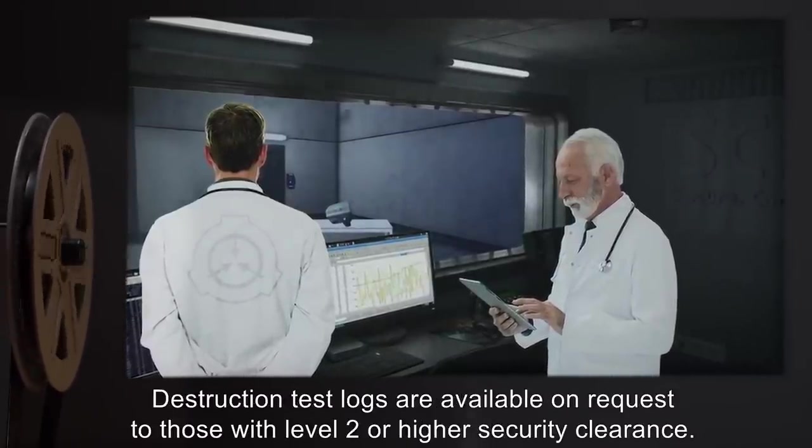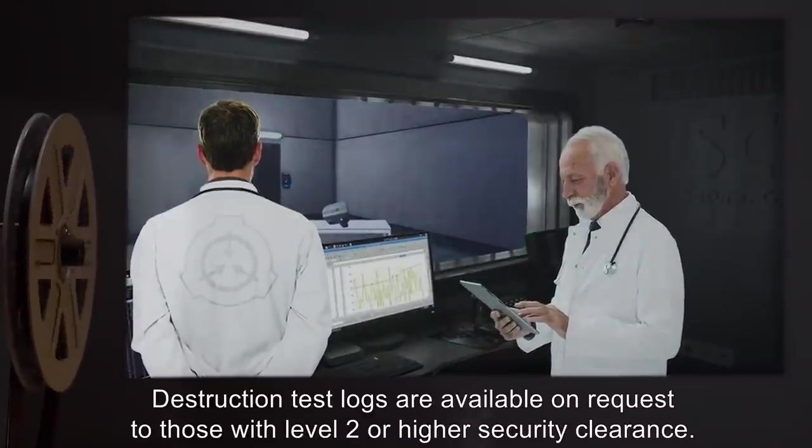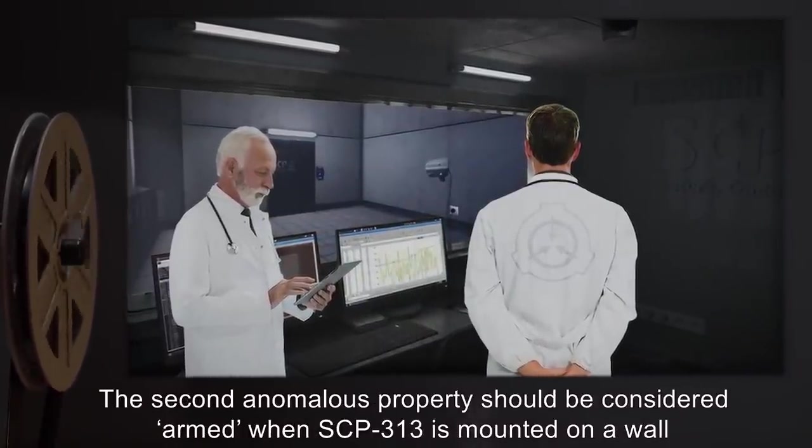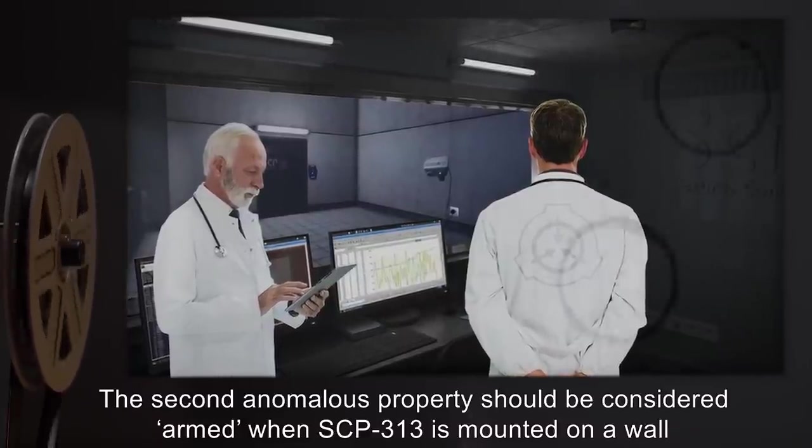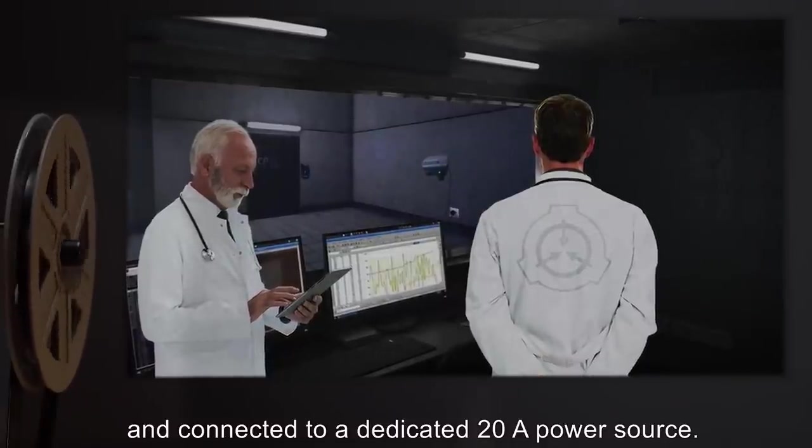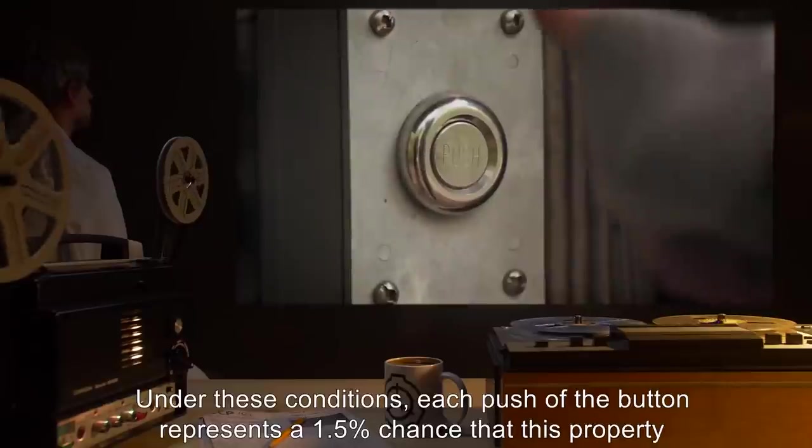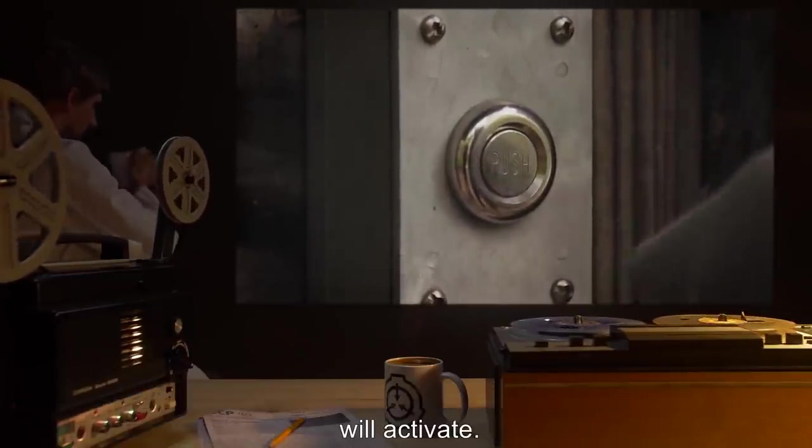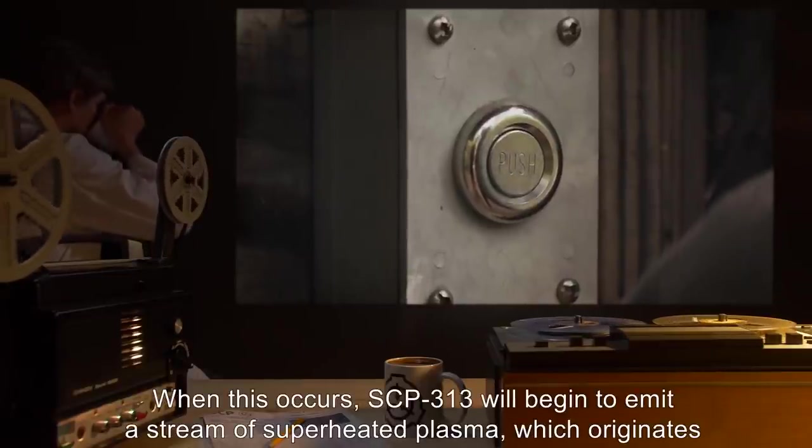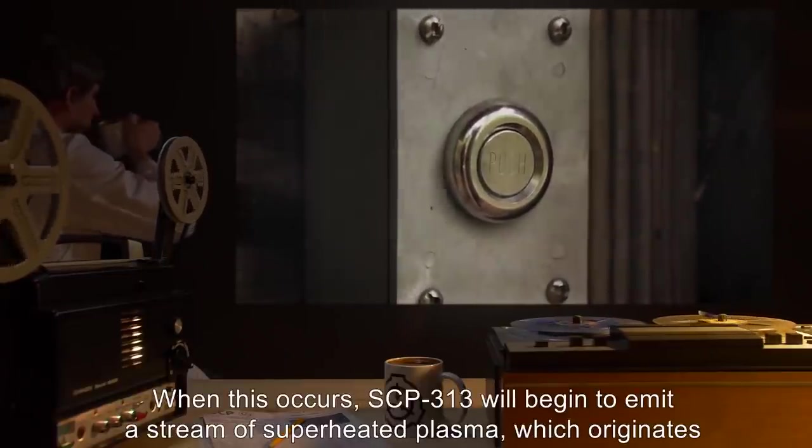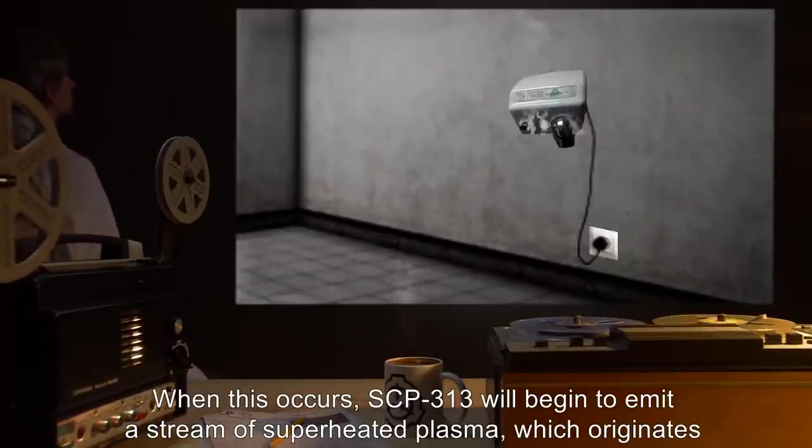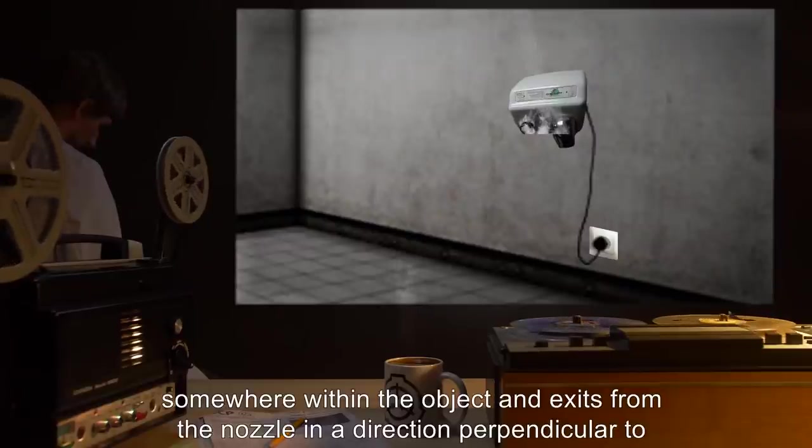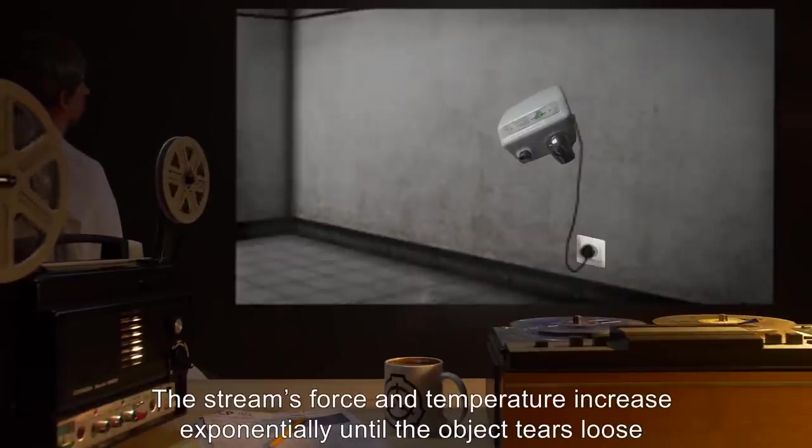Destruction test logs are available on request to those with Level 2 or higher security clearance. The second anomalous property should be considered armed when SCP-313 is mounted on a wall and connected to a dedicated 20-amp power source. Under these conditions, each push of the button represents a 1.5% chance that this property will activate. When this occurs, SCP-313 will begin to emit a stream of superheated plasma which originates somewhere within the object and exits from the nozzle in a direction perpendicular to the surface on which the object is mounted.